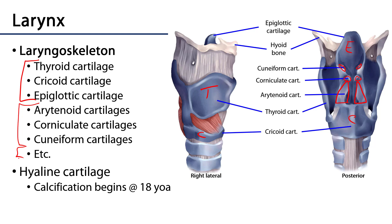These are the major elements of the laryngoskeleton. These cartilaginous elements are hyaline cartilage, and as an individual ages — starting at about 18 years of age — they begin the process of calcification.